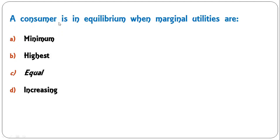Next: 'A consumer is in equilibrium when marginal utilities are' — minimum, highest, equal, or increasing? A consumer will be in equilibrium when marginal utilities are equal, so C is the correct answer.